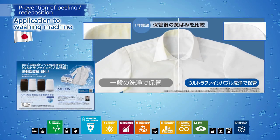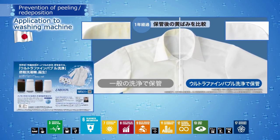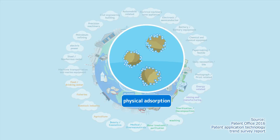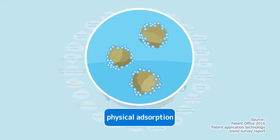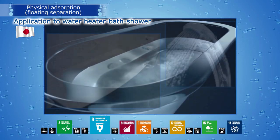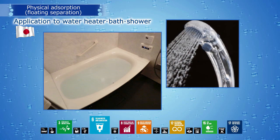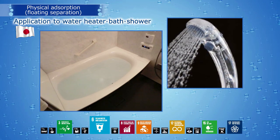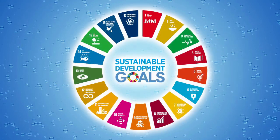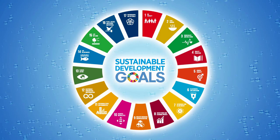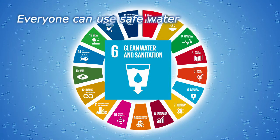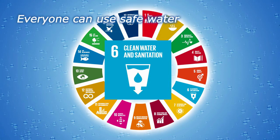For example, the cleaning efficiency of washing machines can be improved using ultra-fine bubble water. The effect of floating separation as physical absorption ensures a cleaner and thus a better living environment. For example, it is used in the automatic cleaning of piping between a water heater and a bath. A desirable cleaning effect can also be achieved in a bath or shower. These examples of applications mainly contribute to Goal 6 of the SDGs: ensure availability and sustainable management of water and sanitation for all.